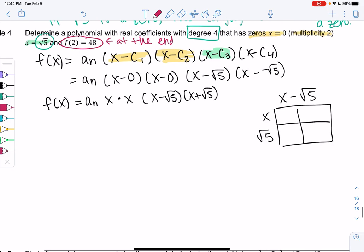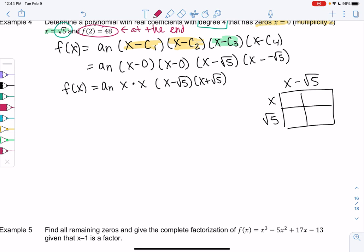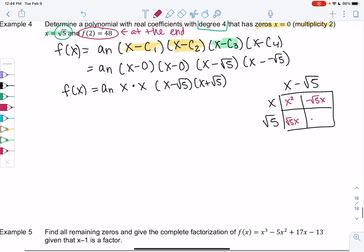And I get x times x is x squared, minus root 5x, and then we get plus root 5x. And then bottom right, square root 5 times square root 5 is 5, and then the negative sign makes it negative. So what's nice about conjugates is those middle terms will always cancel out. So this term will just be x squared minus 5.